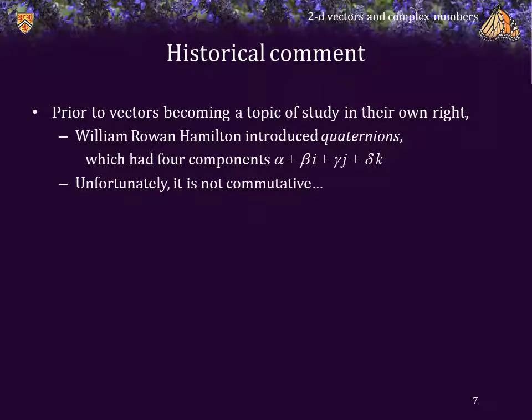However, they had a problem. For a multiplication to be defined on quaternions, it ends up that the resulting multiplication is not even commutative. So, multiplying a quaternion q times a quaternion p may not give you the same value as multiplying p by q.